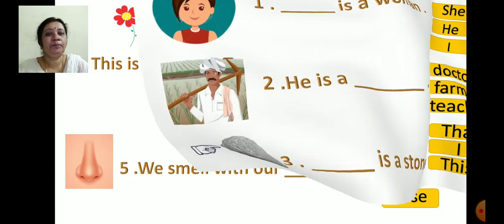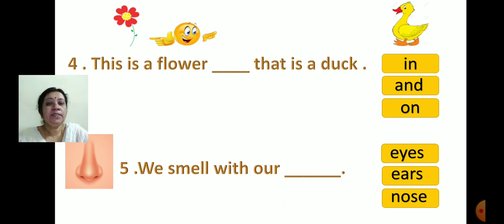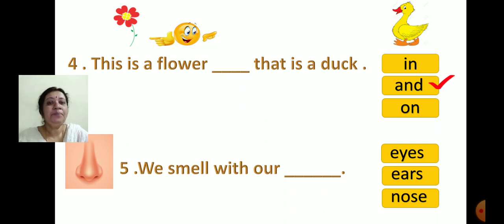Now see the fourth one: 'This is a flower dash. That is a duck.' The options are In, And, and On. Here, two sentences are joined. To join these two sentences, we use 'and'. So I will click on 'and'. The sentence becomes: 'This is a flower and that is a duck.'